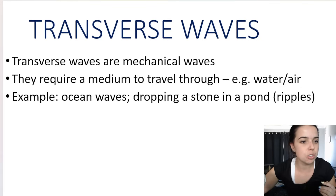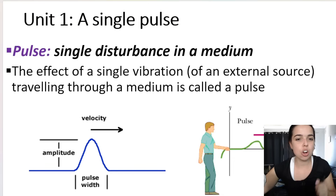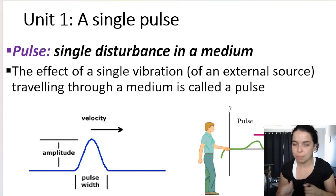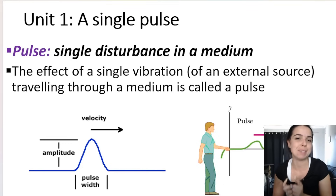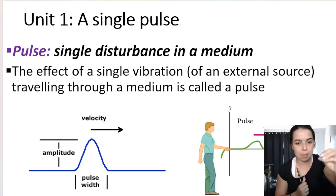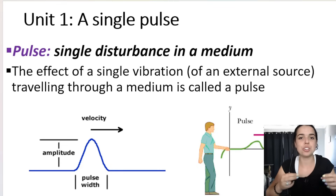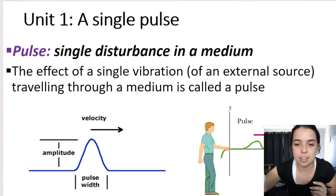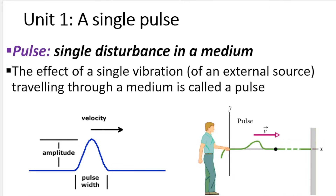Transverse waves are made up of a series of pulses. A pulse is a single disturbance in a medium — it's the effect of a single vibration. An external source, such as dropping a stone into a pond, creates a single vibration, which is a pulse. A train or series of pulses makes up the wave. If you look at this diagram, we have a person shaking a rope — that single shake represents one pulse, and a series of those makes up a wave.